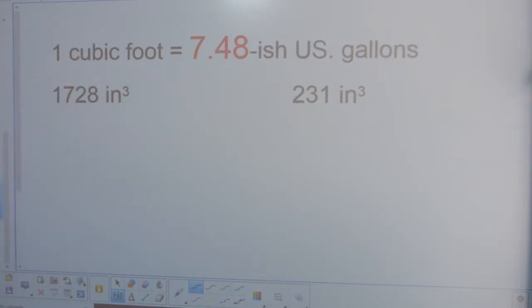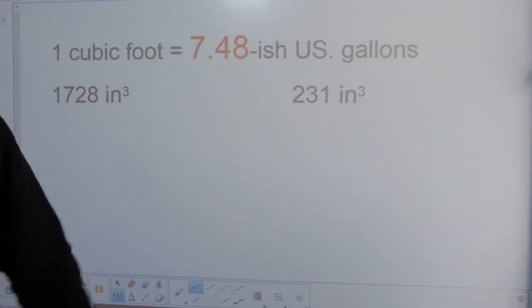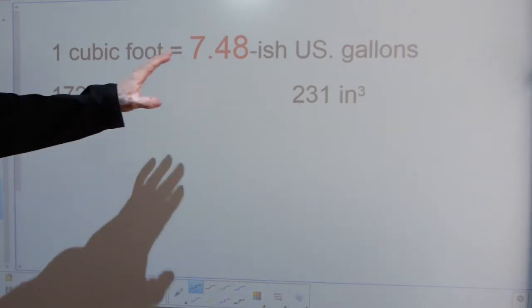A cubic foot is 1728 cubic inches, and the US gallon is 231 cubic inches by definition.